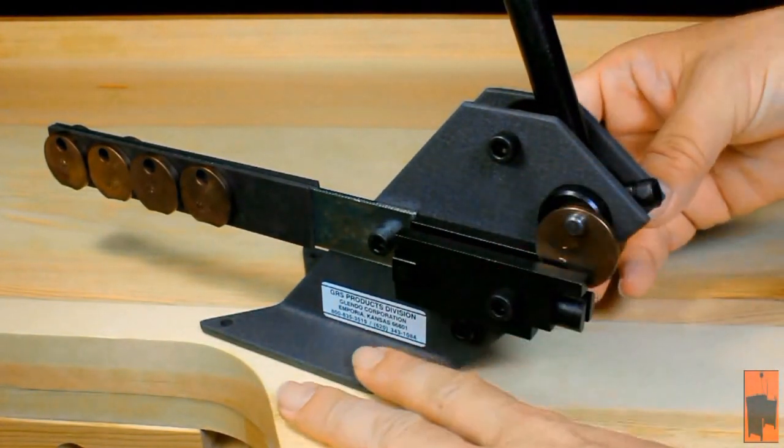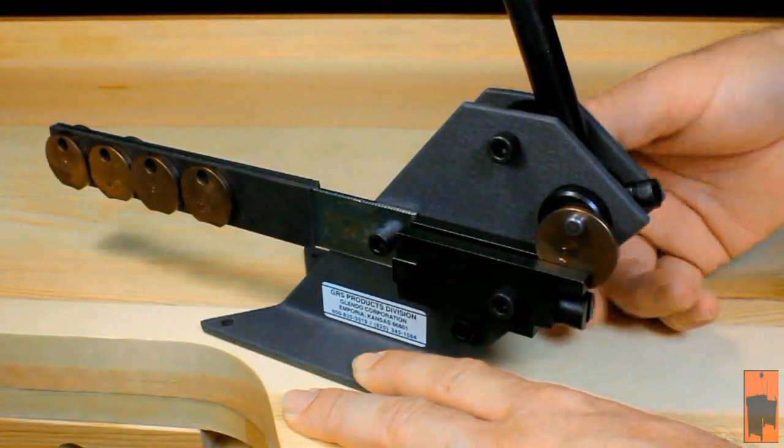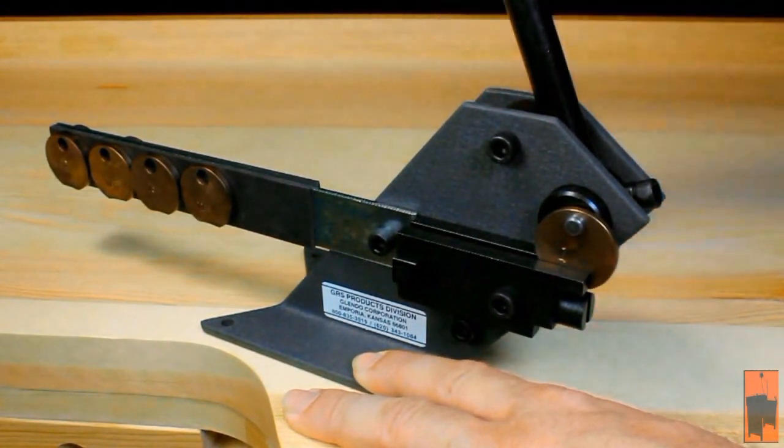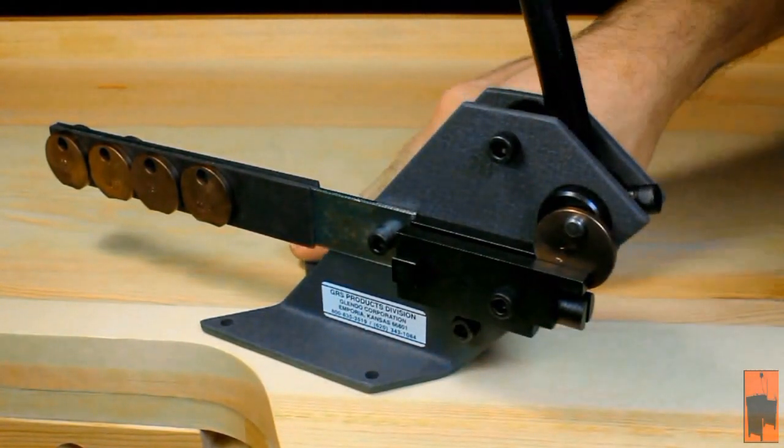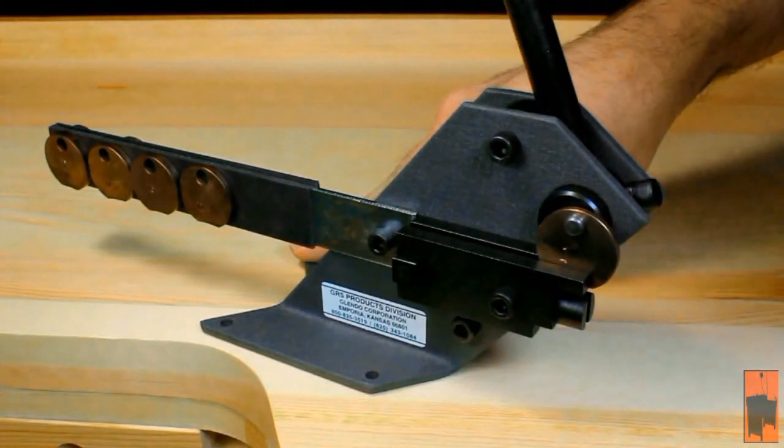Here you'll see me installing the blade. You open the blade guide, select the blade that you want. Here I've chosen my size 1. Then tighten it down and you're ready to cut.